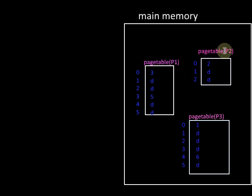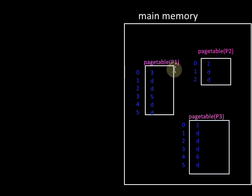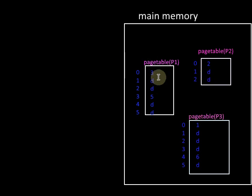Suppose we have three processes P1, P2, and P3 residing in main memory at the same time — that is, some pages of each of these processes are kept in main memory. Then the page tables of all the processes must also be kept in main memory. The problem is that the page tables of all these processes will consume a considerable amount of memory space.